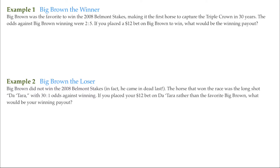In these examples, we are going to calculate the winnings when betting, given certain odds. Now, most of the time when you hear the term odds, and certainly when they are posted or announced, that means the odds against winning. When the odds against winning are low, such as on a horse in a race, that means there is a good chance that that horse will win.